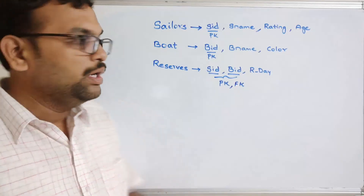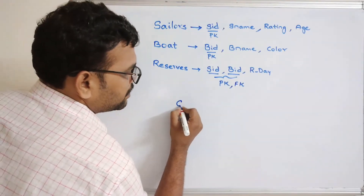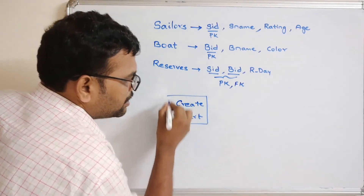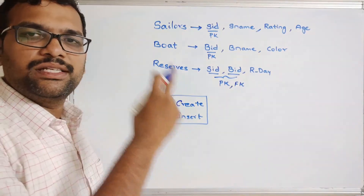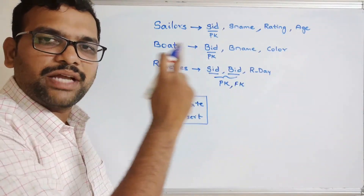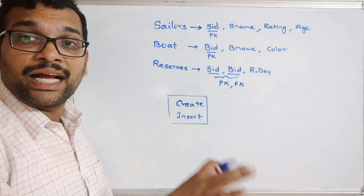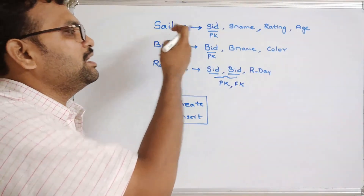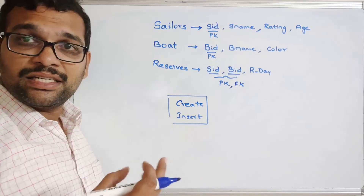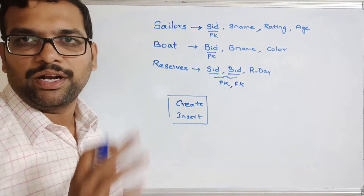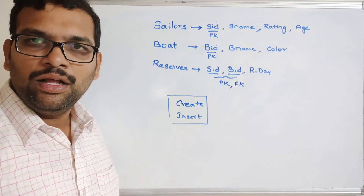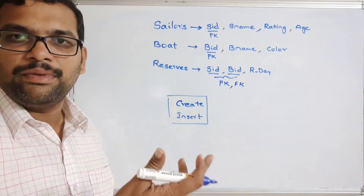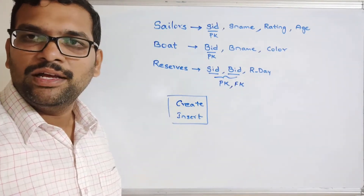In this session, I'll use two commands: CREATE and INSERT. We'll create the tables — sailors, boats, and reserves — with the given attributes and constraints for primary key and foreign key. After that, we'll insert a few rows into each table. In the next session, we'll discuss queries related to these tables. Let's move on to MySQL.